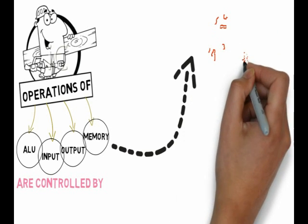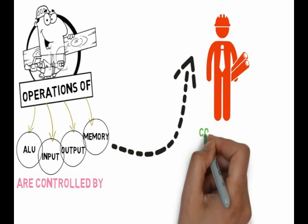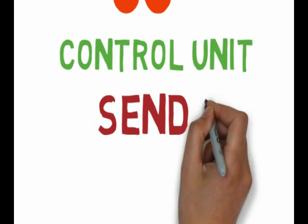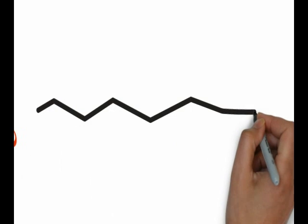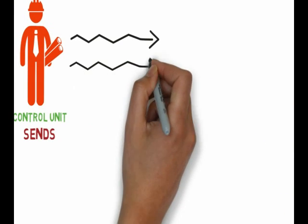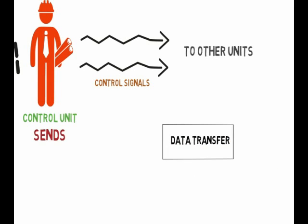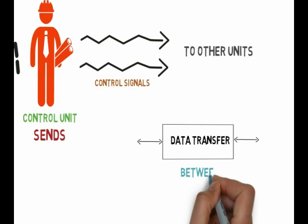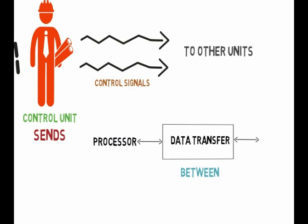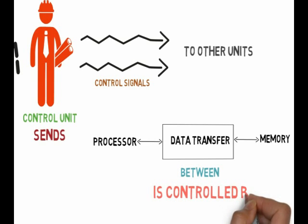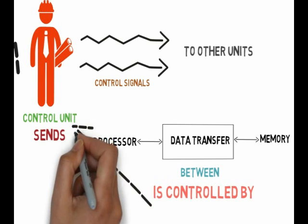Operations of the ALU, input, output, and memory are controlled by the control unit. The control unit sends control signals to other units. Data transfer between the processor and memory are also controlled by the control unit.